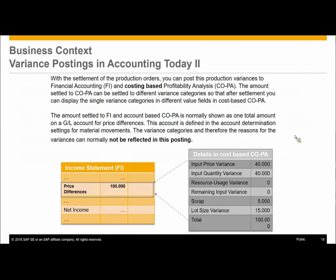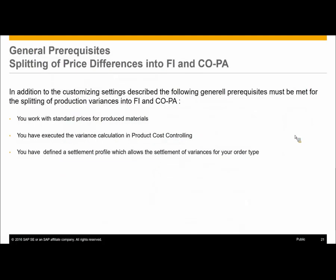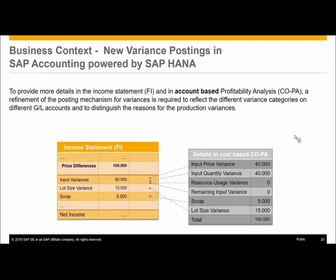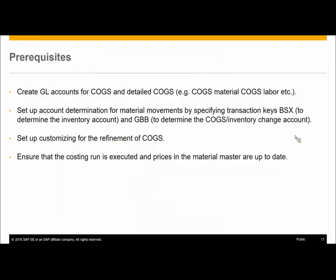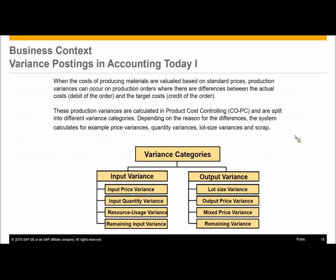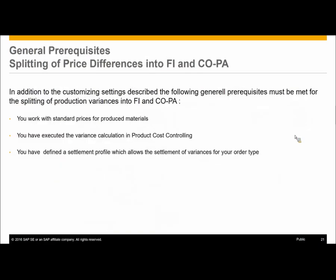This slide basically explains the same thing. There are some prerequisites for the price differences split: you work with standard prices, you execute variance calculation, and you define the settlement profile. Similarly there are prerequisites for COGS split — the costing run has been executed and the prices in the material master are up to date.